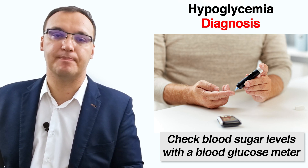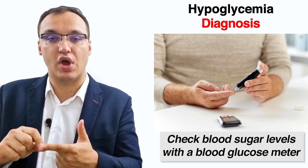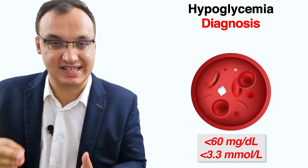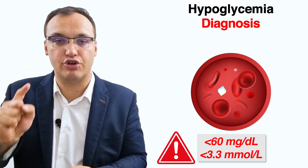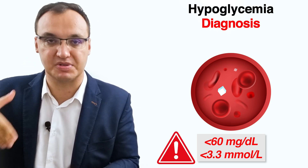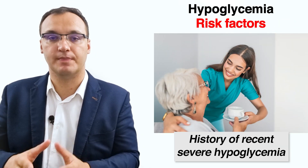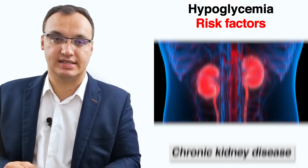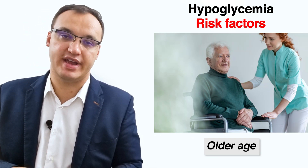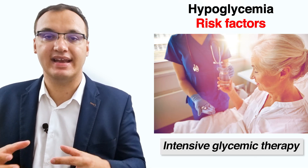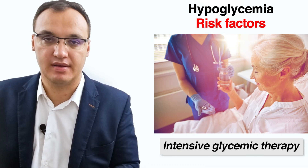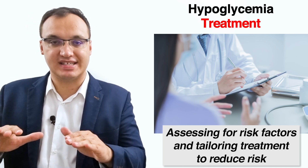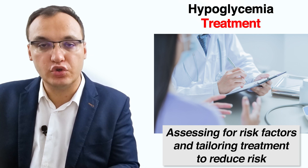You check your blood sugar levels with a blood glucose meter. You have hypoglycemia when your levels are below 60 mg per deciliter or below 3.3 mmol per liter. This alert value signals the risk for developing all the symptoms mentioned, and you must be treated promptly with appropriate actions such as eating carbohydrates. Risk factors for hypoglycemia include a history of recent severe hypoglycemia, long duration of diabetes, chronic kidney disease, malnutrition, older age, exercise, alcohol intake, and intensive glycemic therapy.